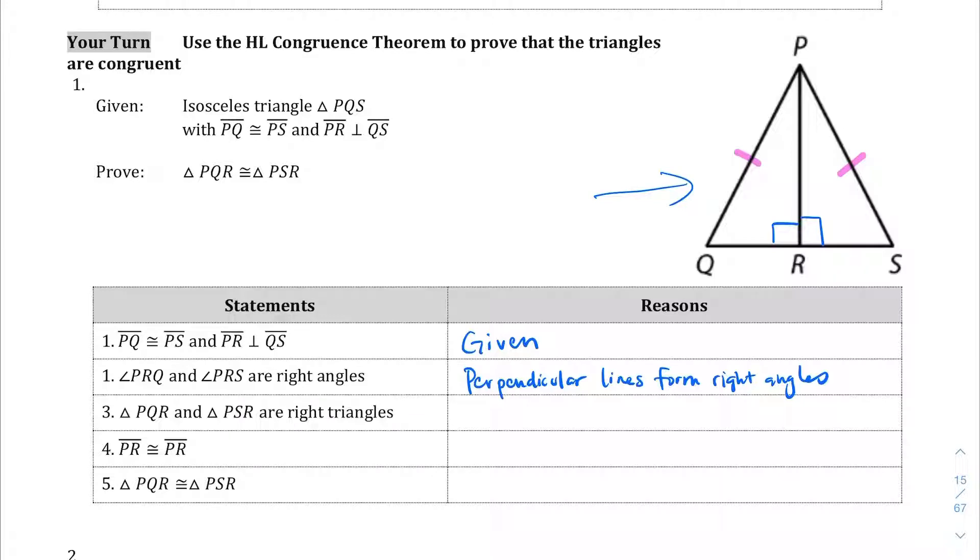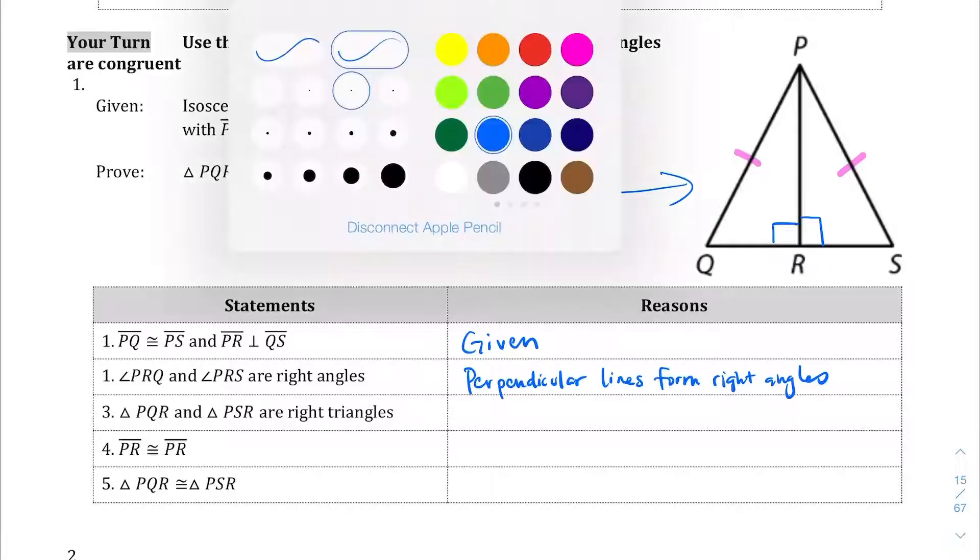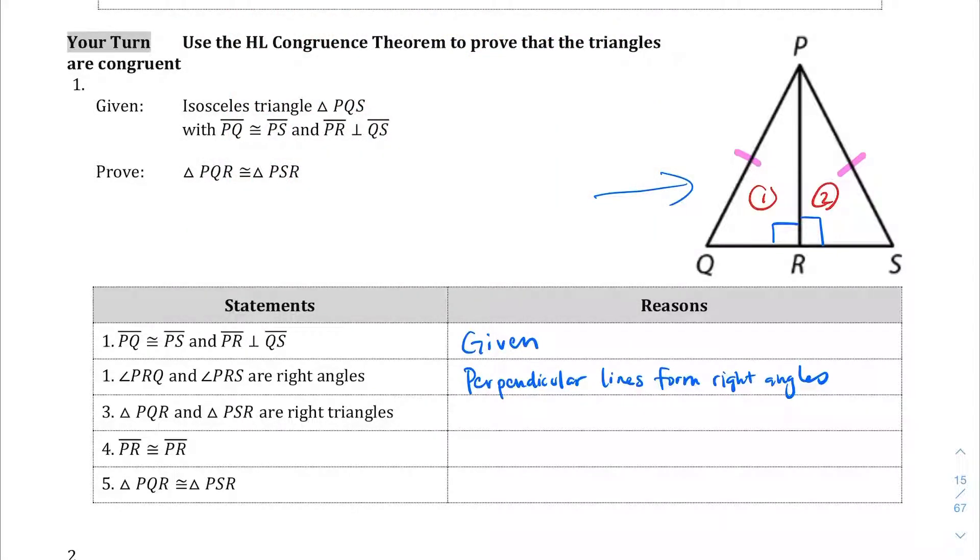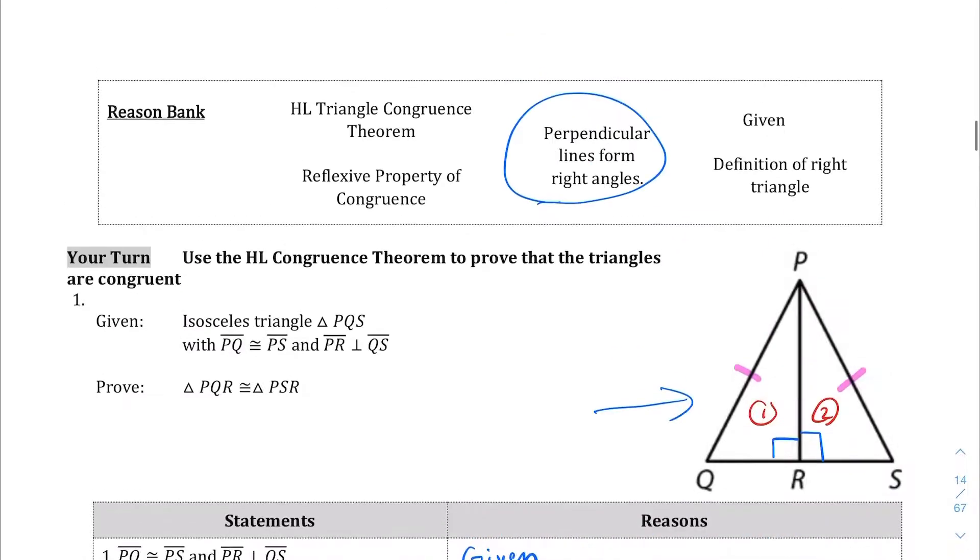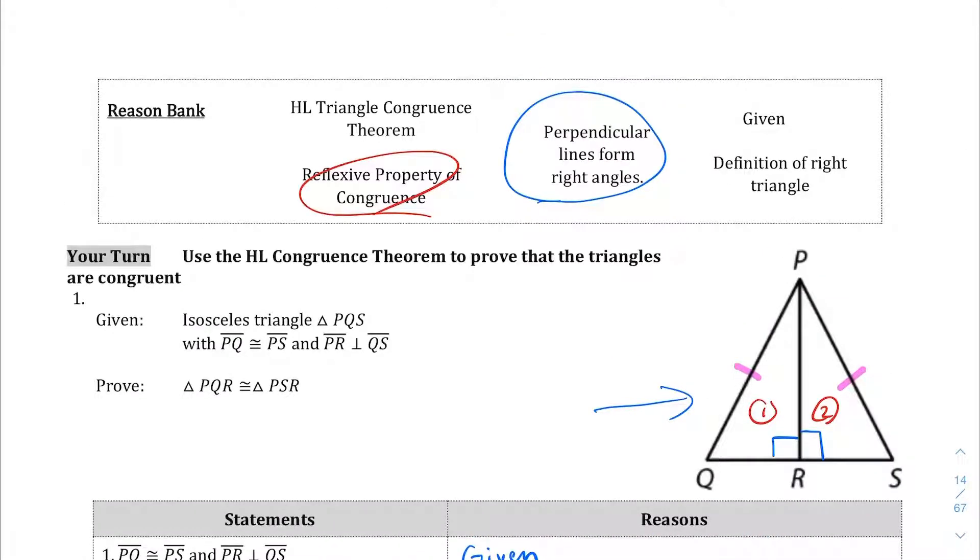And then triangle PQR and PSR are right angles, and so indeed if we separate these two triangles, to triangle 1 and triangle 2, those both have right angles, therefore they are right triangles, and that's just the definition of right triangle. And then PR being congruent to PR, that's just a reflexive statement again, reflexive property of congruence. And I didn't even check if it was up here, and it is, reflexive property of congruence.